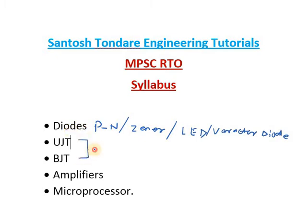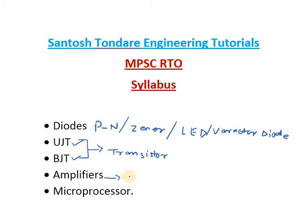UJT and BJT are basically types of transistors. UJT stands for Unijunction Transistor and BJT stands for Bipolar Junction Transistor. These two terminologies cover the transistors. Then we discuss how diodes, UJT, and BJT can be used in amplifiers. Amplifier types include Class A, Class B, and push-pull amplifiers. We will discuss all these terminologies.